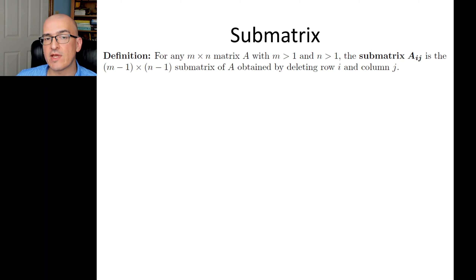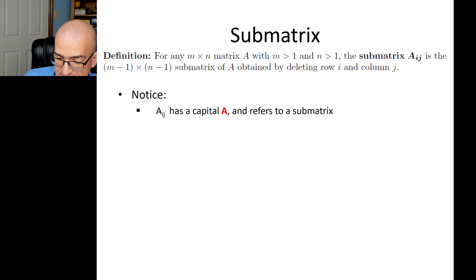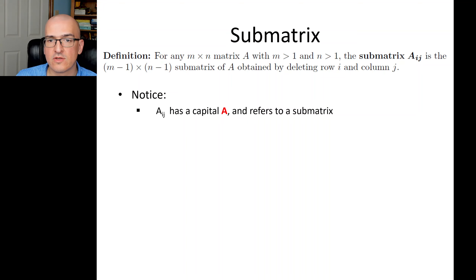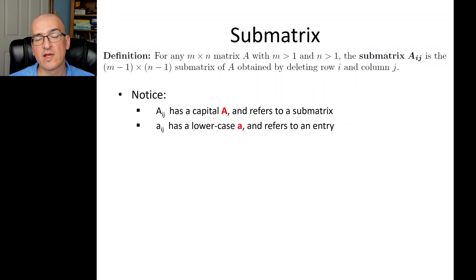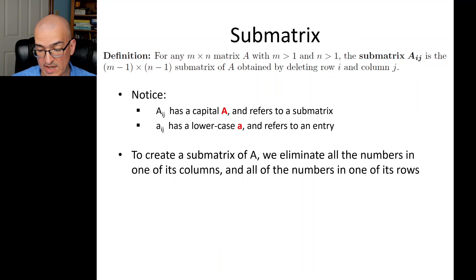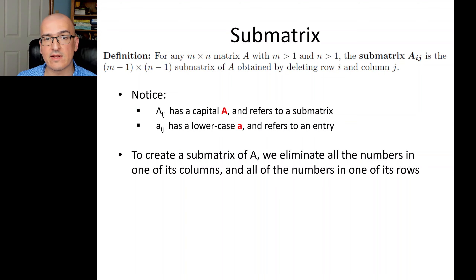For example, if you want the submatrix A23, you delete row 2, you delete column 3, and then write the other numbers into the smaller matrix. The notation for a submatrix is capital Aij. Notice it's very similar to lowercase aij, which refers to an entry of the matrix — just a single number. If you're asked for capital Aij, that's asking for a submatrix; if asked for lowercase aij, that's asking for a single entry.